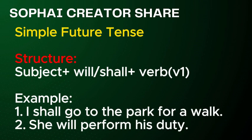Simple future tense. Structure: Subject plus will or shall, plus verb V1. Examples: 1. I shall go to the park for a walk. 2. She will perform her duty.